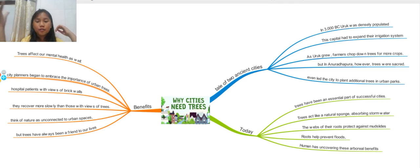The city was populated but there weren't too many places, so they cut down trees to get places to plant crops. But in another city called Anuradhapura, trees were sacred. People there loved trees and how they helped them, and they loved how trees were something beautiful. The city even led efforts to plant additional trees in urban parks.